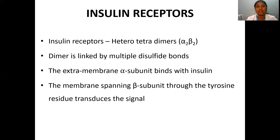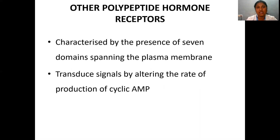Insulin receptors are heterotetramers — made up of two different subunits existing as dimers, linked by multiple disulfide bonds. The extracellular alpha subunit binds insulin, and the membrane-spanning beta subunit transduces the signal via tyrosine residues into the interior of the cell. Other polypeptide hormone receptors are characterized by seven domains spanning the plasma membrane and transduce signals by altering the rate of production of cyclic AMP.